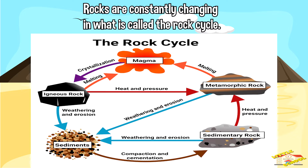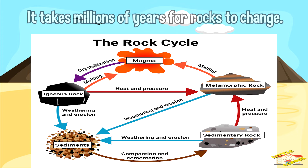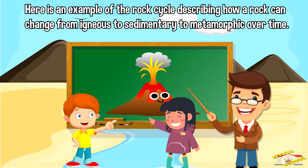The rock cycle: rocks are constantly changing in what is called the rock cycle. It takes millions of years for rocks to change. Here is an example of the rock cycle describing how a rock can change from igneous to sedimentary to metamorphic over time.